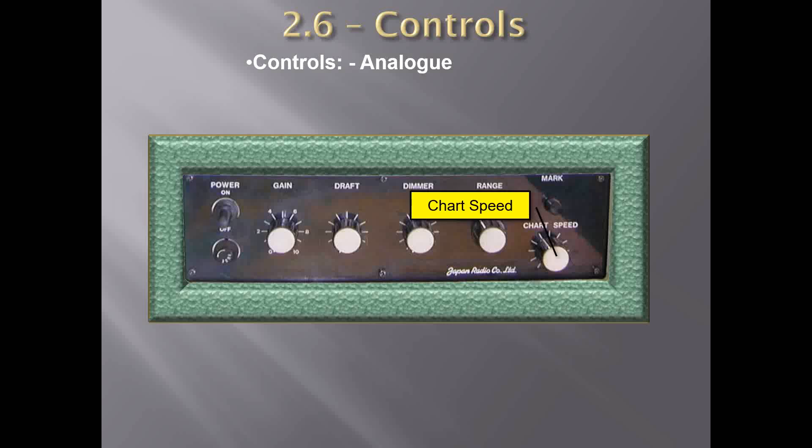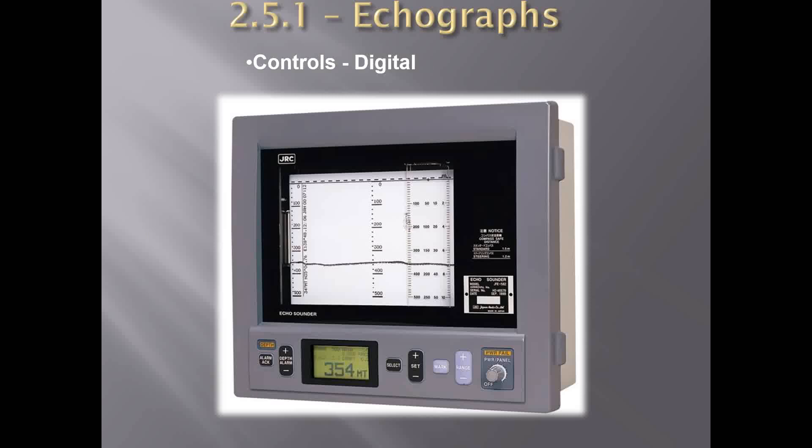Then you have the fuse switch, which relates to the electrical fuses. You also have the chart speed switch, which controls the rate at which the paper chart moves. Some people set it at low settings so the depth is recorded clearly. Many put it in the center — normally you don't set it at very high speed, as depths may not be recorded clearly at high speeds. The manufacturer also recommends certain settings.